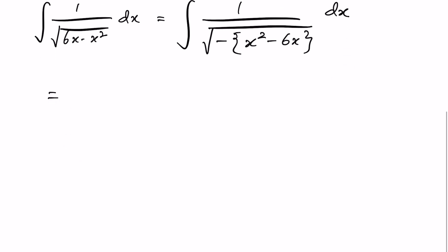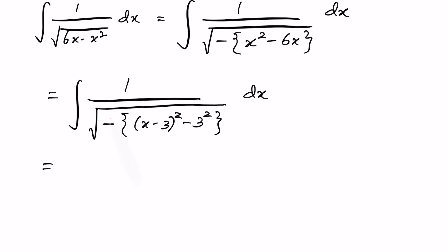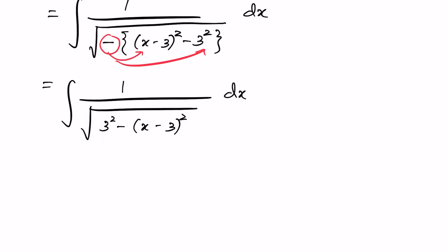Completing the square inside the brackets gives (x − 3)² − 9, where 9 = 3². Distributing the negative sign, the expression under the square root becomes 3² − (x − 3)². So the integral becomes 1 over square root of [3² − (x − 3)²] dx.